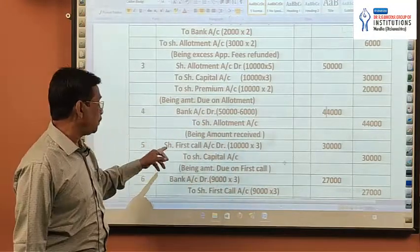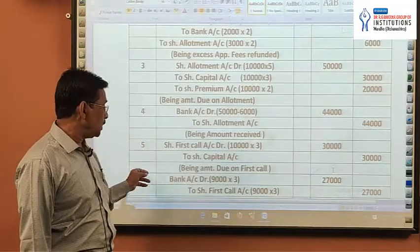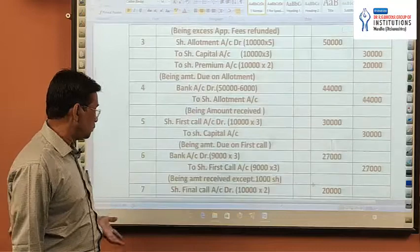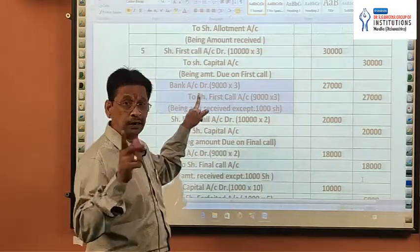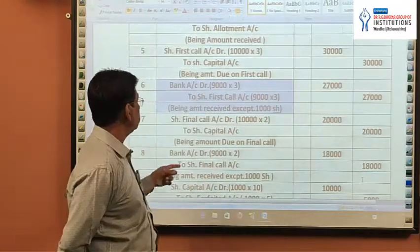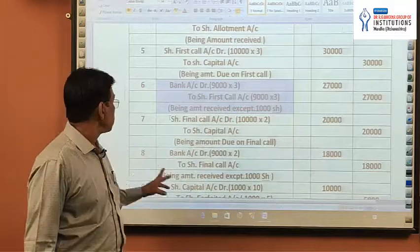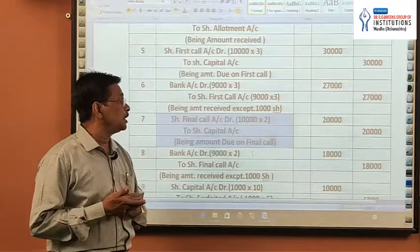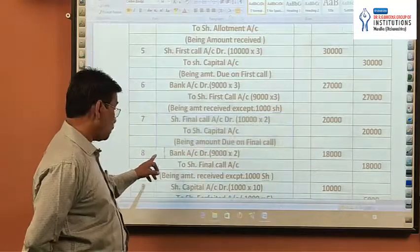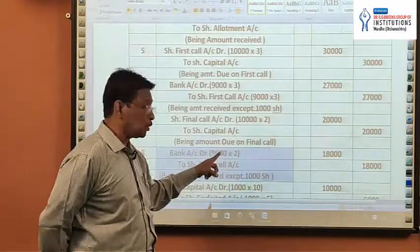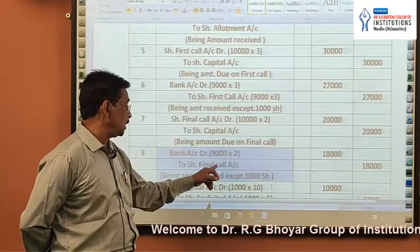Then first call: Share First Call Account debit, 10,000 multiplied by Rs.3 = Rs.30,000. Credit Share Capital Account Rs.30,000, being amount due on first call. Amount received: Bank Account debit — one shareholder had failed to pay on his 1,000 shares, so 9,000 multiplied by Rs.3 = Rs.27,000. Credit Share First Call Account Rs.27,000, being amount received except 1,000 shares. Then final call: Share Final Call Account debit, 10,000 multiplied by Rs.2 = Rs.20,000. Credit Share Capital Account Rs.20,000, being amount due on final call. Amount received: Bank Account debit — again 1,000 unpaid, so 9,000 multiplied by Rs.2 = Rs.18,000. Credit Share Final Call Account Rs.18,000, being amount received except 1,000 shares.